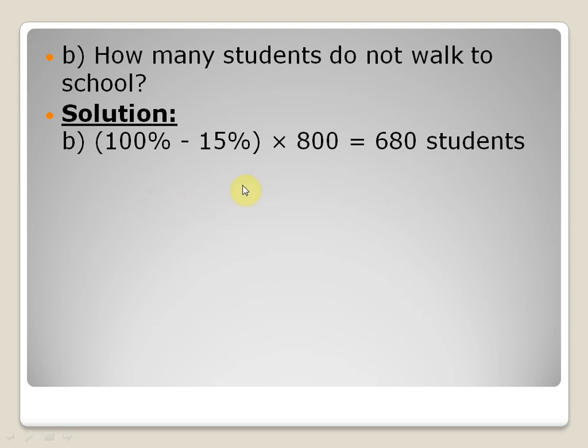So 85% multiplied by 800: 85 over 100 into 800. The two zeros of 100 are cancelled out with the 800, and you can simply multiply 85 by 8, which becomes 680 students which do not walk to school.